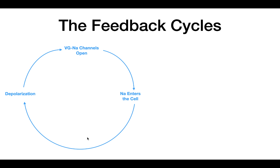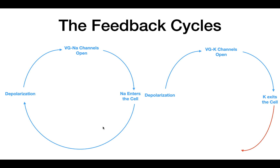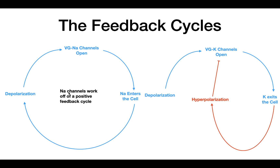The second feedback cycle involves the potassium channels. Voltage-gated potassium channels are also opened by depolarization, but they cause potassium to flow out of the cell, resulting in hyperpolarization, which then inhibits and closes the voltage-gated potassium channels. So the voltage-gated sodium channels are regulated by a positive feedback cycle, whereas the potassium channels work off a negative feedback cycle. These feedback cycles are crucial in determining the all-or-none principle.